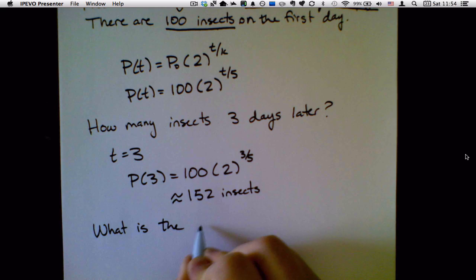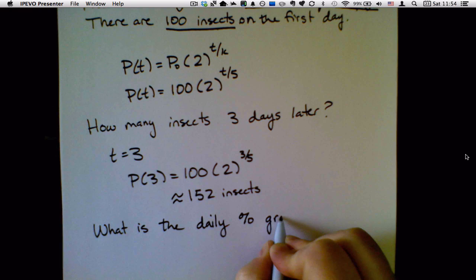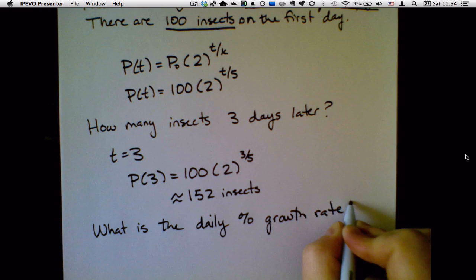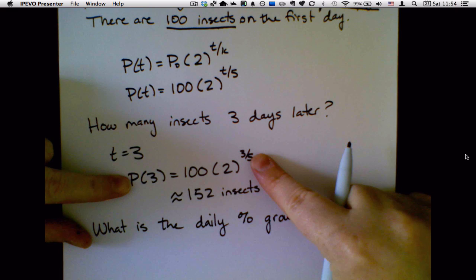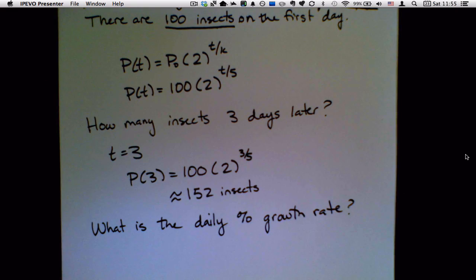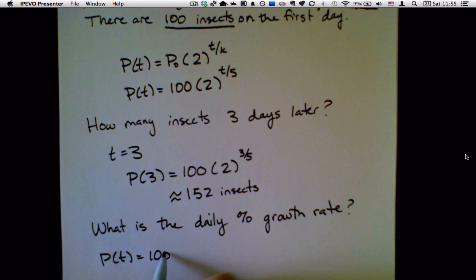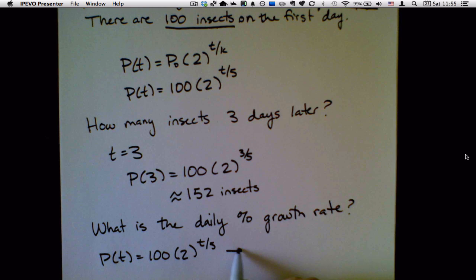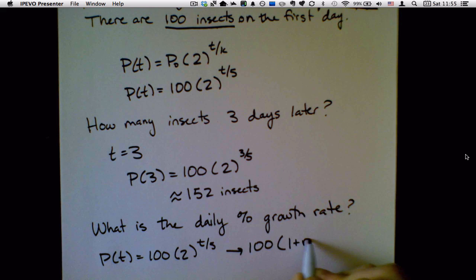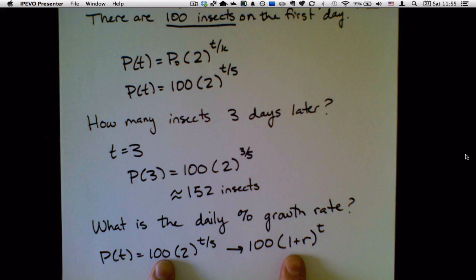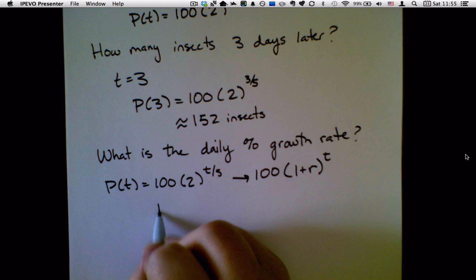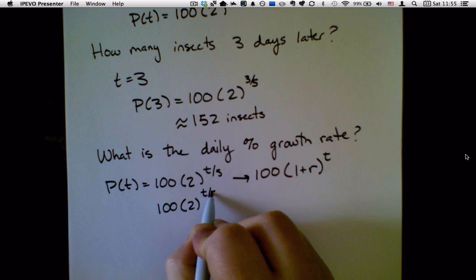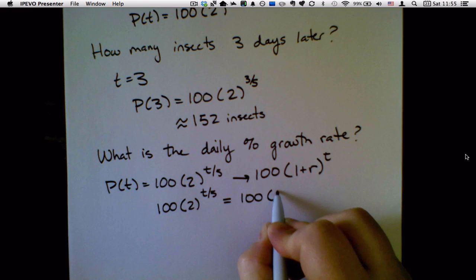What is the daily percent growth rate? I'm going to transform this into something to do with growth rate. What I'm going to do is set them equal and solve for r. So 100 times 2 to the t over 5 equals 100 times 1 plus r to the t.